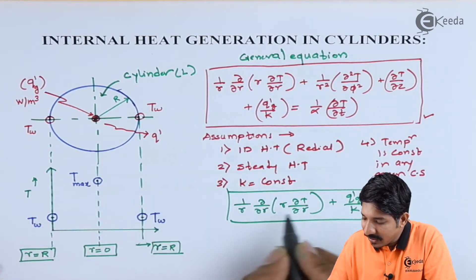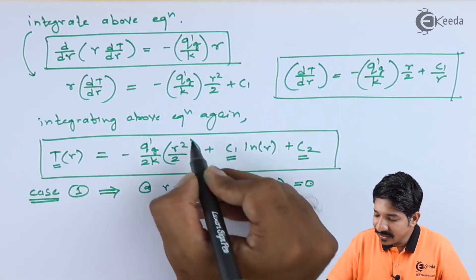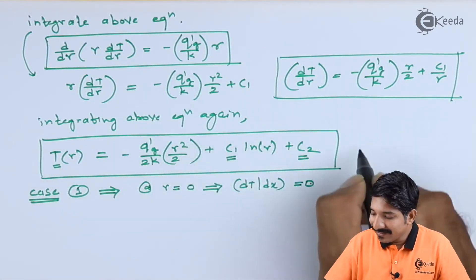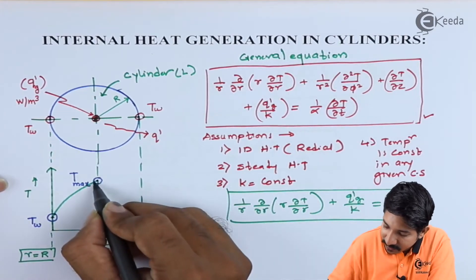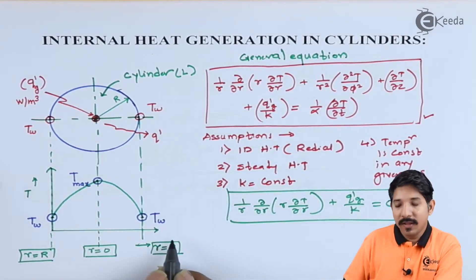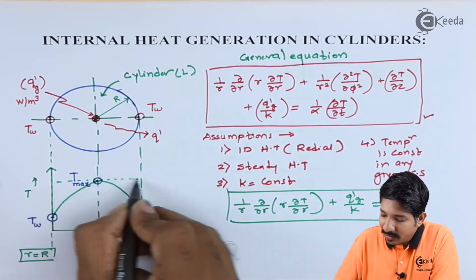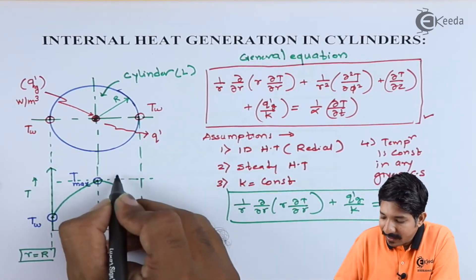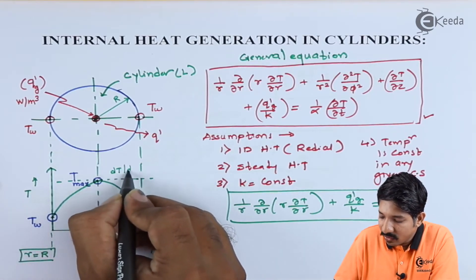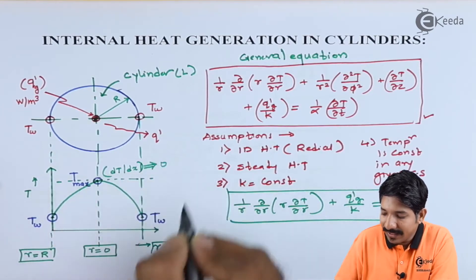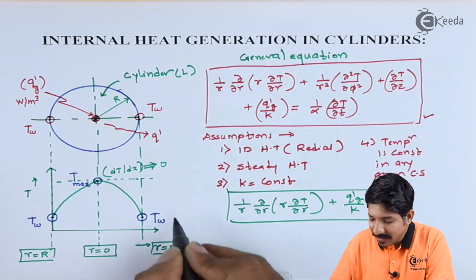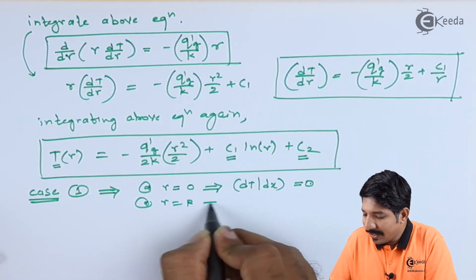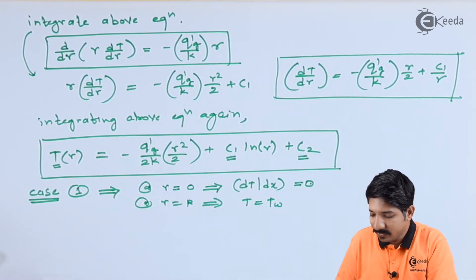The temperature profile is a function of r², so it is quadratic in nature. The first boundary condition is at r = 0, dT/dr = 0; and the second boundary condition is at r = R, the temperature equals T_W. This is the first case.